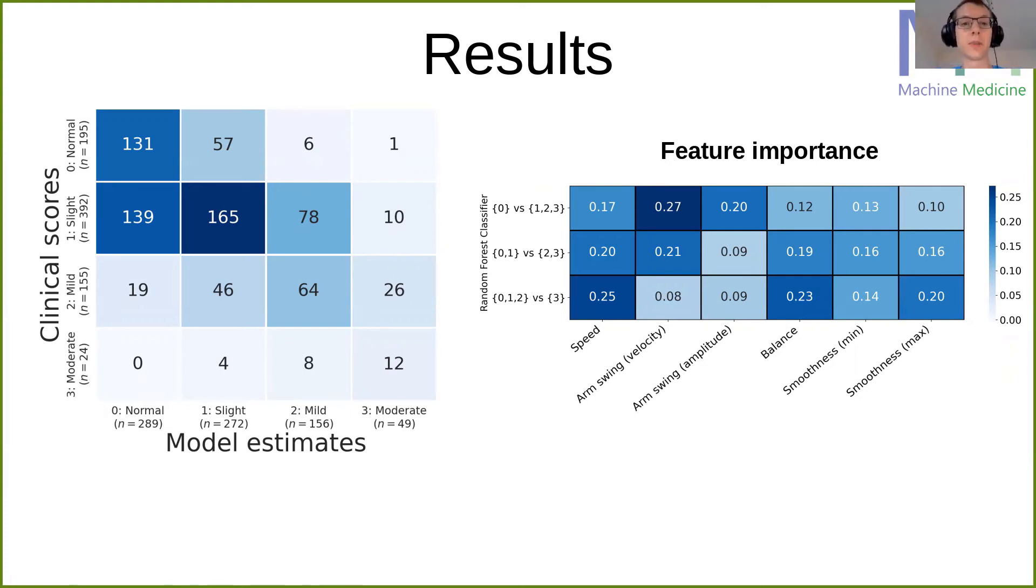But it's almost useless during later stages of the disease, where things such as speed or balance or smoothness of movement are much more important to distinguish between very severely impaired gait and maybe slightly impaired gait.